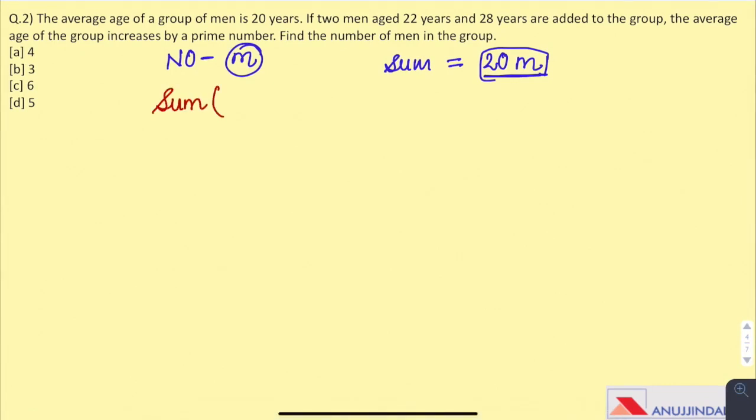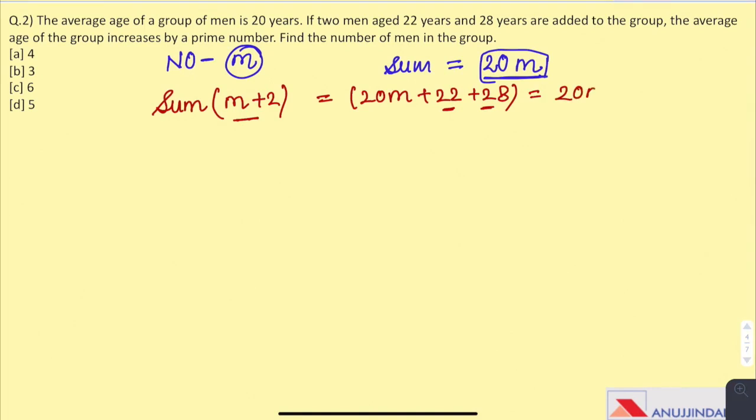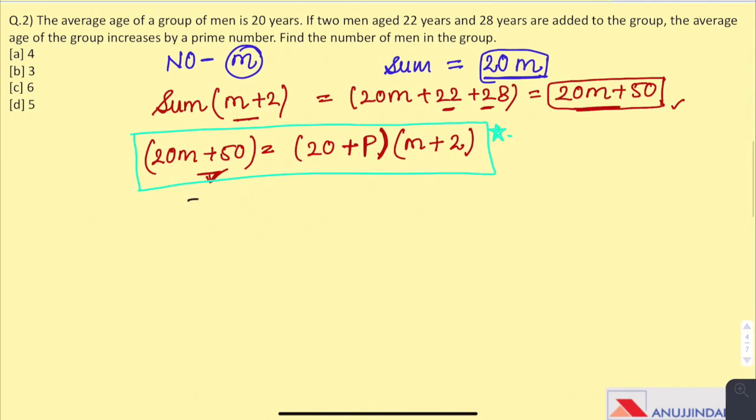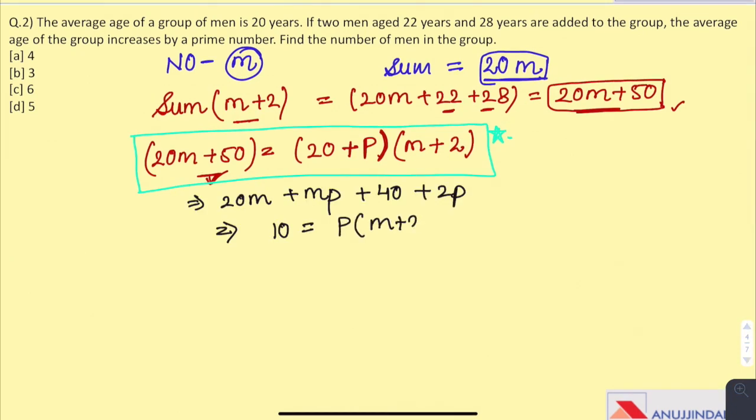When two more men are added to the group, sum of the ages of m plus 2 members would be 20m plus 22 and 28, which are the ages of two new members, which comes out to be 20m plus 50. Now, as per the question, the average increases by a prime number. So, 20 plus p, let us assume p is a prime number, multiplied by m plus 2, which is the number of members in the group. On further solving the equation, we get 10 equals p multiplied by m plus 2.